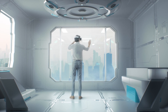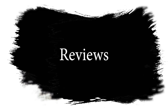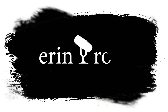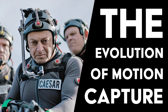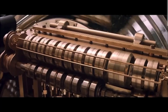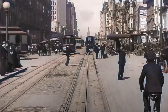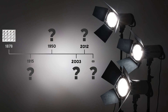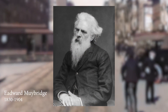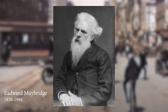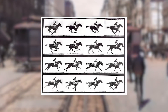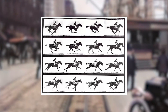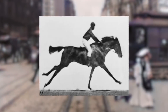Since you clicked on this video you're probably wondering where motion capture started. To find out we gotta hop in a time machine and head back to California in 1878, where photographer Edward Muybridge was being funded by the governor of California to invent photography methods to capture the motion of a galloping horse, to discover if all four hooves ever left the ground at once.